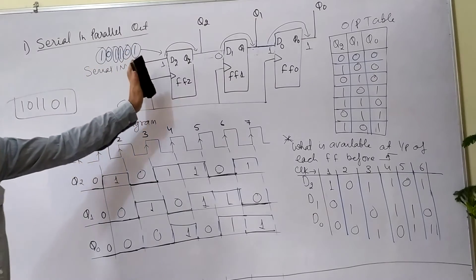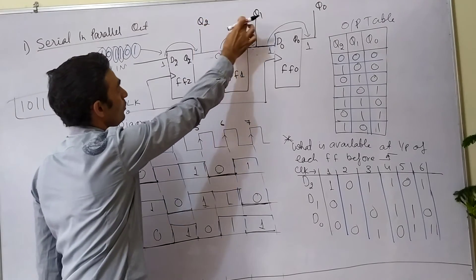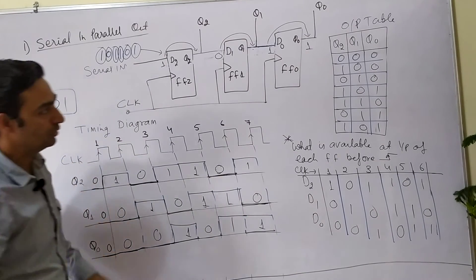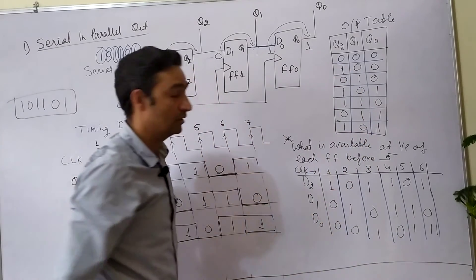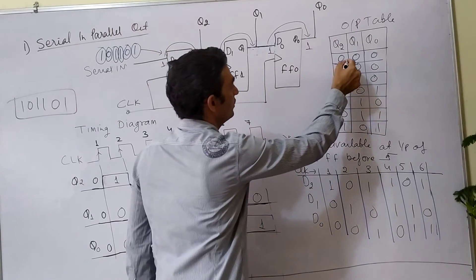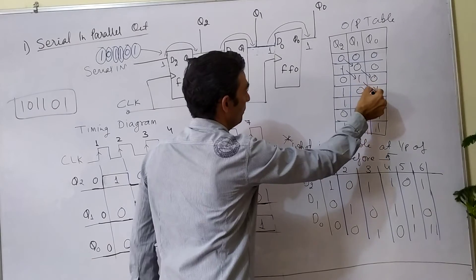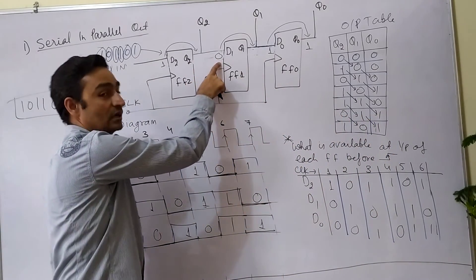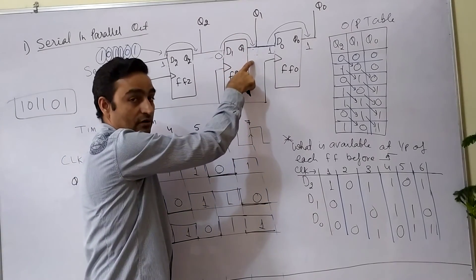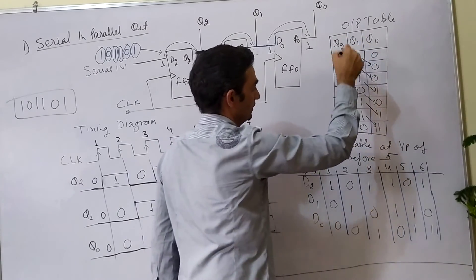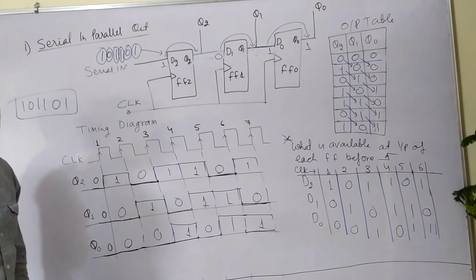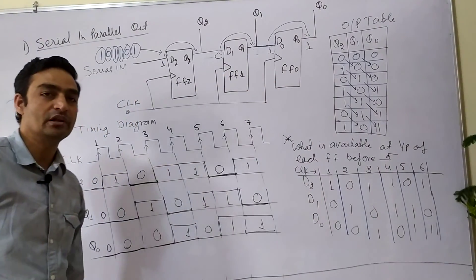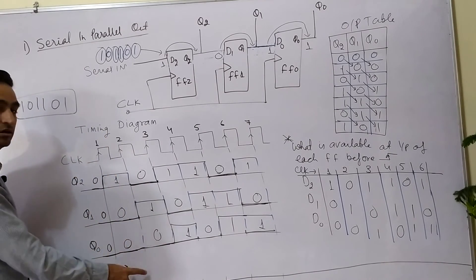We have obtained the complete output table for Q2, Q1, Q0. The input data was 101101, and you can observe a peculiar pattern — data is propagating between the flip-flops such that whatever is the output of one flip-flop becomes the input of the next, and after each clock the data propagates accordingly. This was about the Serial In Parallel Out shift register, explained using the output table and timing diagram. Thank you very much.